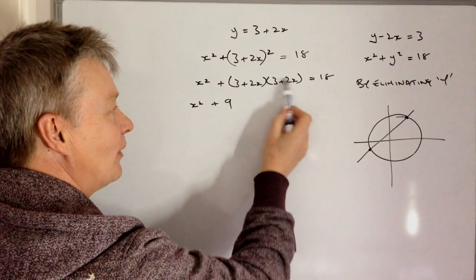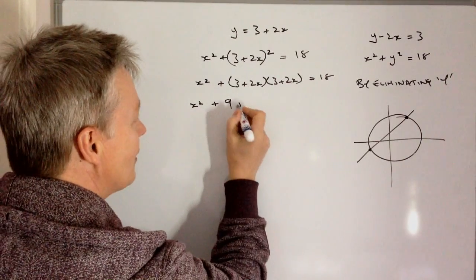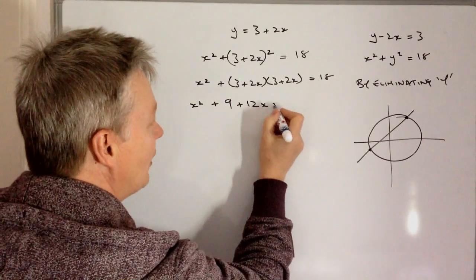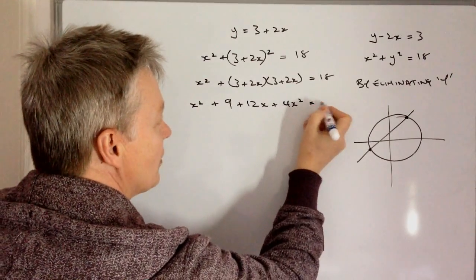I've got 3 times plus 2x is plus 6x, plus another 6x, so that's going to be plus 12x, and then I've got plus 4x squared, and that equals 18.